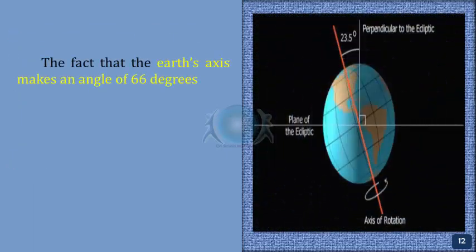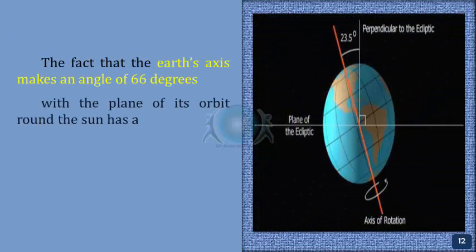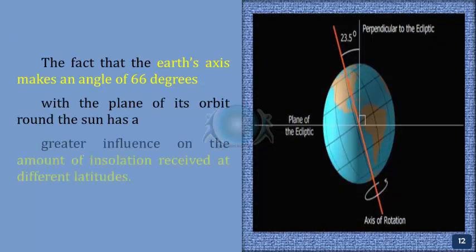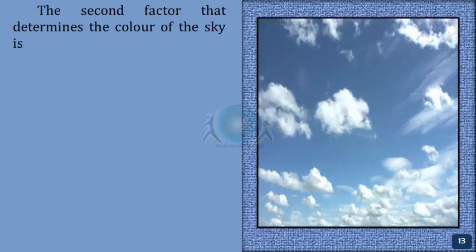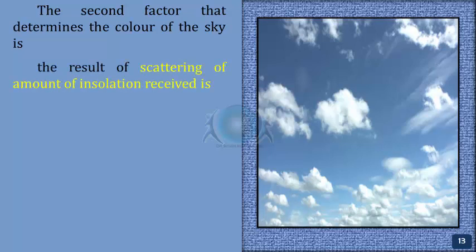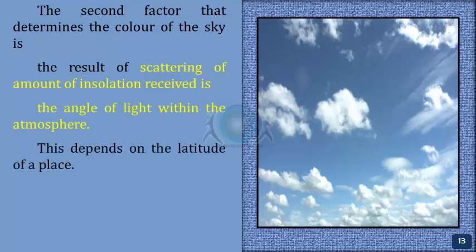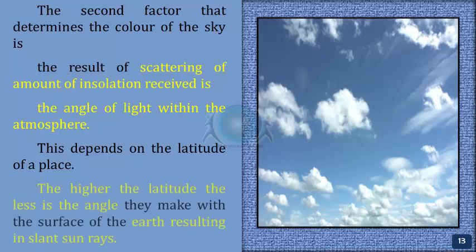The fact that the Earth's axis makes an angle of 66 degrees with the plane of its orbit around the Sun has a greater influence on the amount of insolation received at different latitudes. Note the variations in the duration of the day at different latitudes on solstices. The angle of light within the atmosphere — that is, the angle of incidence — depends on the latitude of a place. The higher the latitude, the lesser is the angle the Sun's rays make with the surface of the Earth, resulting in slant sun rays.